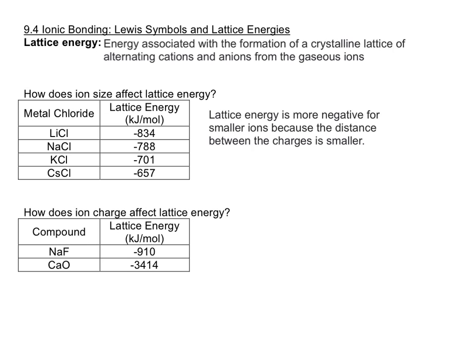And now how does the ion charge affect the lattice energy? So here we have NaF and we have CaO. So here sodium has a plus one charge and fluorine has a minus one. Whereas calcium has a plus two and oxygen has a minus two. And you can see that you get a whole lot more energy when you form the lattice with the plus two and the minus two than you do with the plus one and the minus one. And again, this should make sense because Coulomb's law tells us that the attraction gets bigger when the charges get bigger. So the two factors are the distance, which we saw above with the ion size and the amount of charge, which is what we're seeing here.